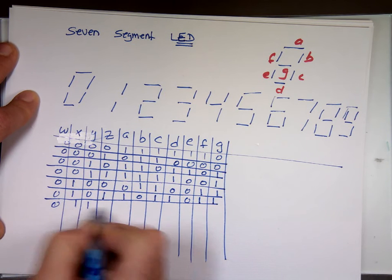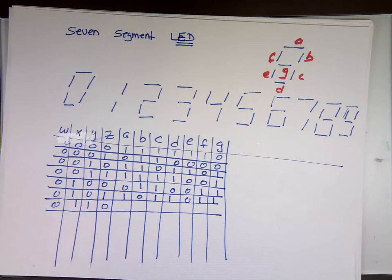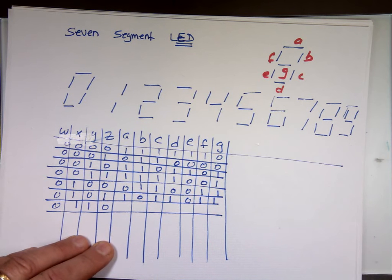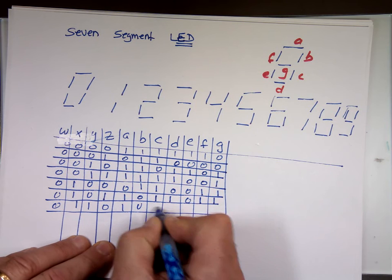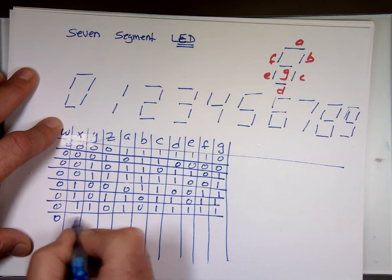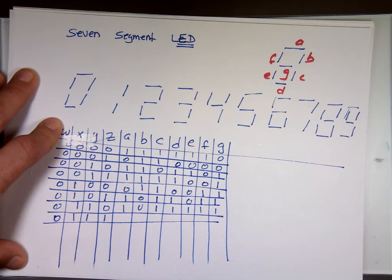6. 6 will be everything except B. 7. A, B and C are on.